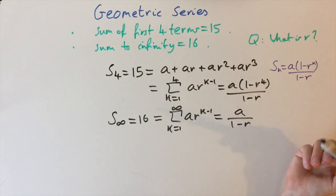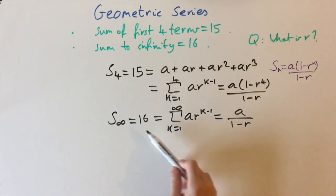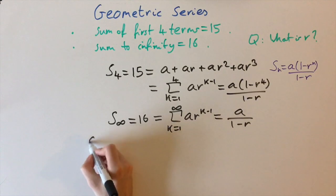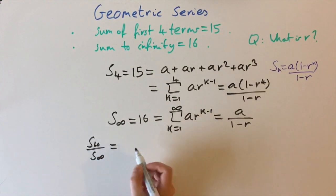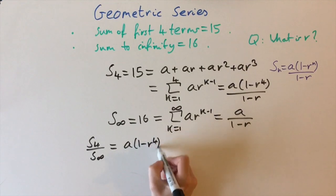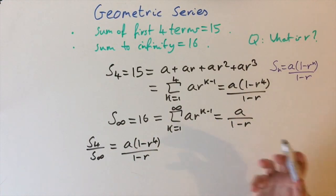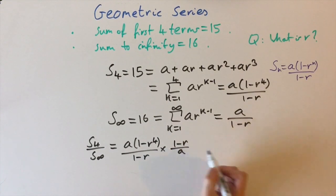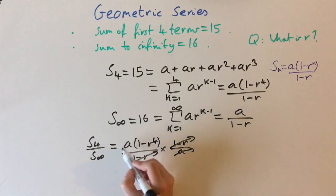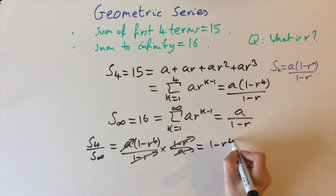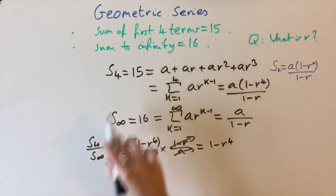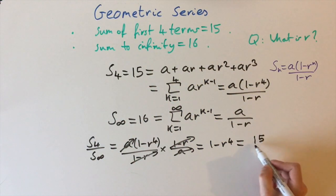We have two equations with two unknowns a and r, so let's divide S4 by S∞. Taking the S4 expression — a times (1 minus r⁴) over (1 minus r) — and dividing by the S∞ expression, we flip and multiply by (1 minus r) over a. The (1 minus r) terms cancel and the a's cancel, leaving just (1 minus r⁴). Since S4 = 15 and S∞ = 16, we get 1 minus r⁴ = 15/16.